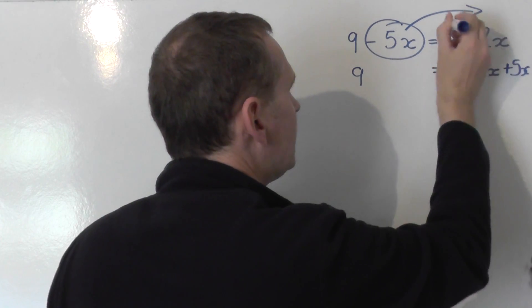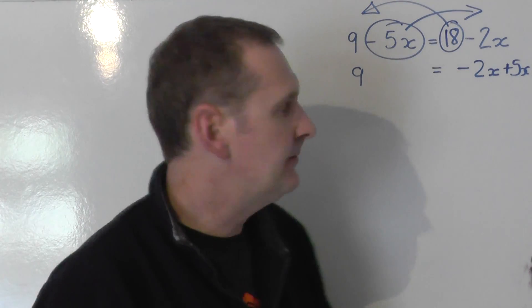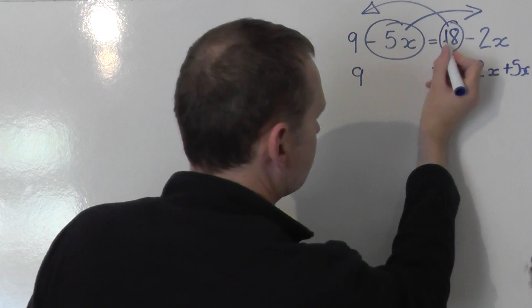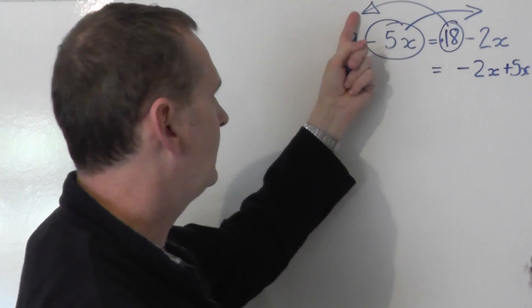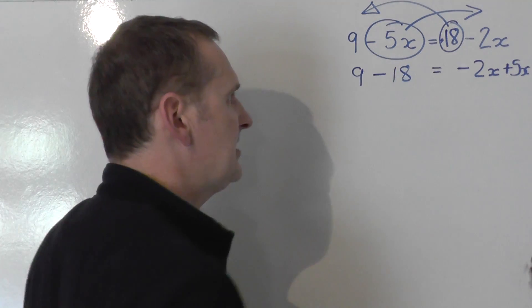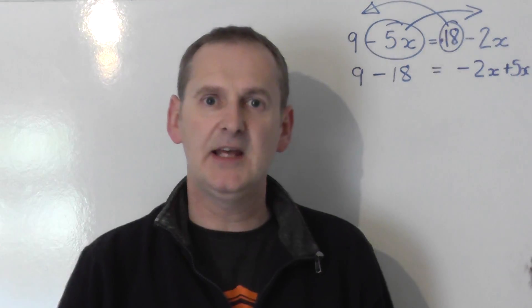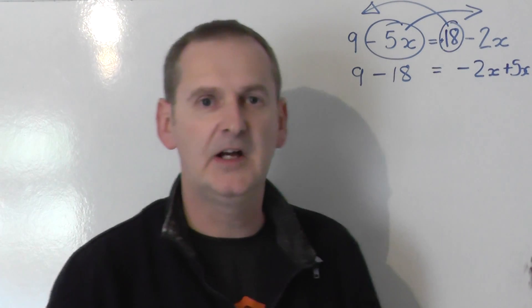I now drag that 18 from the right to the left to join it. There's no sign in front of that 18 on the right-hand side, but it means plus 18. If I drag it from the right to the left, it will swap signs to become minus 18. So we get that statement: 9 minus 18 is equal to minus 2x plus 5x.